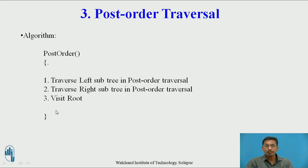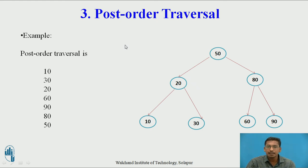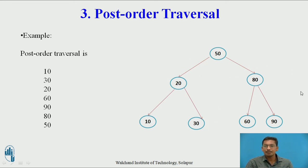The third one is post-order traversal. Again three steps: first traverse the left subtree in post-order, then traverse the right subtree in post-order, and then visit root. We are visiting the root last in post-order traversal. Now we will find the post-order traversal of the same binary search tree. 50 is the root, so it will appear as the last element.